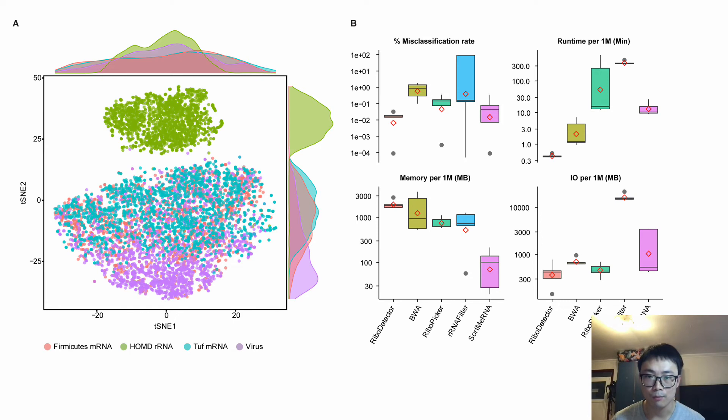On a workstation computer, RiboDetector processed 40 million reads in less than 6 minutes, which was 50 times faster than the most widely used method.